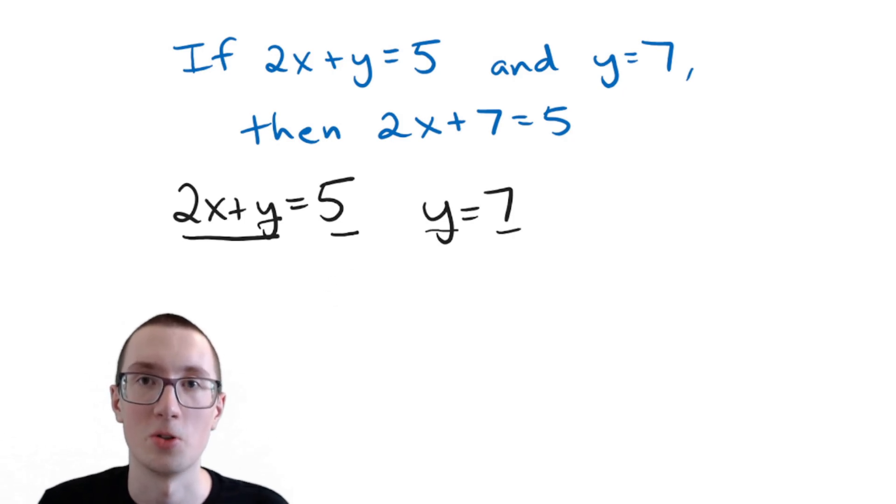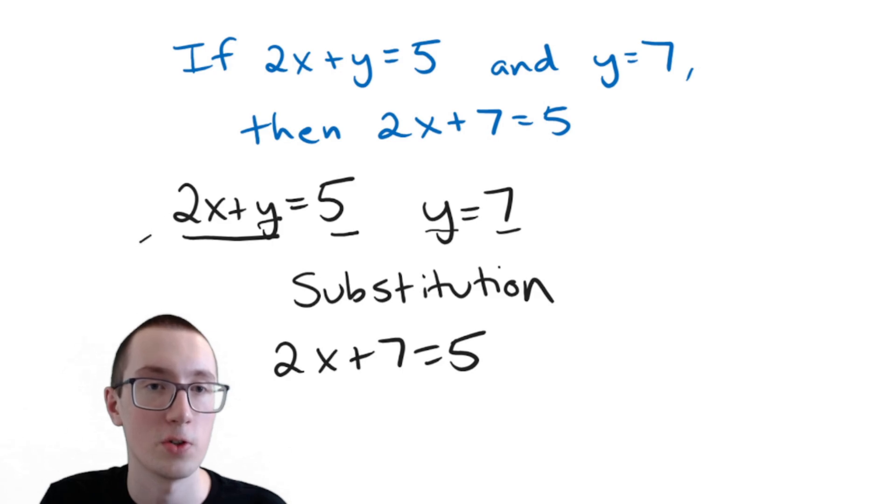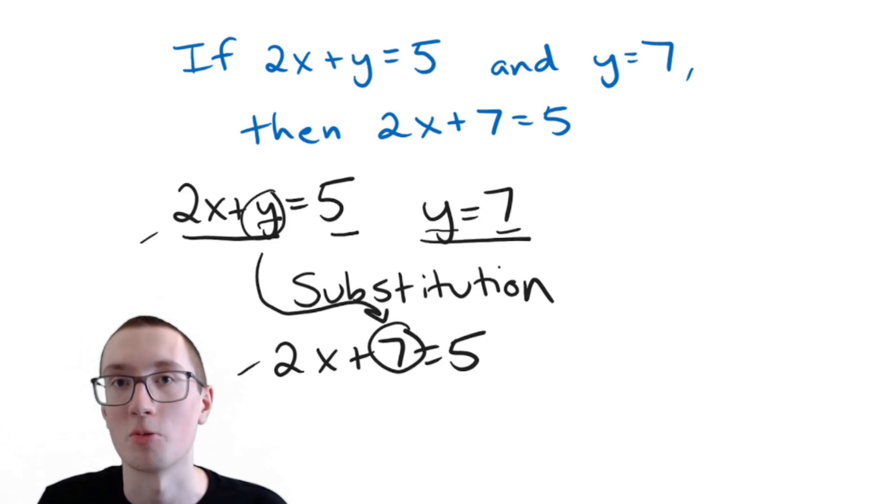So that's not really going to work with that specific formula. Instead, let's look at the substitution property. The substitution property says that if we have two things equal to each other, then they can replace each other in equations. And if you see here, two X plus seven equals five, what's the difference between this first equation and this new equation? Well,